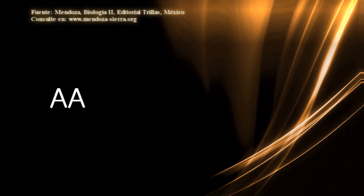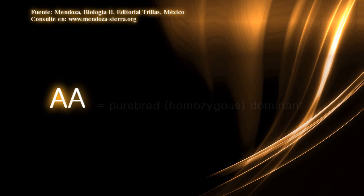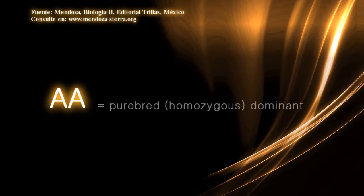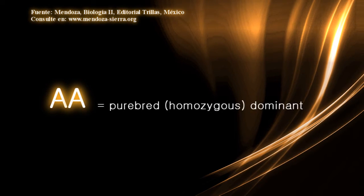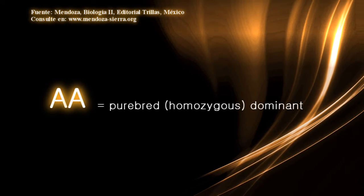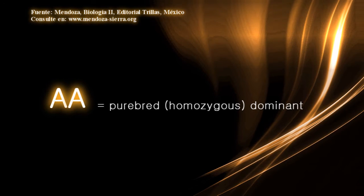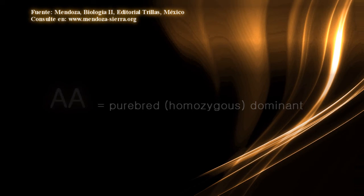When an individual has the genotype uppercase A, uppercase A, it means that it inherited a dominant gene from the father and a dominant gene from the mother, so it is known as a purebred or homozygous.